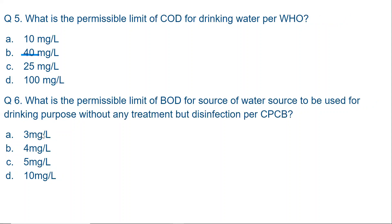Question five: What is the permissible limit of COD for drinking water per WHO, the World Health Organization? The options are 10, 20, 25, 40, or 100 mg per litre. The correct option is 10 mg per litre. COD should not be more than 10 mg per litre in drinking water, according to the World Health Organization.